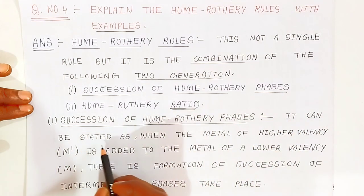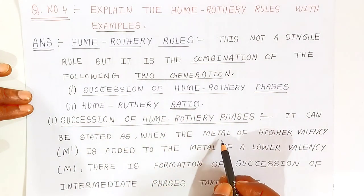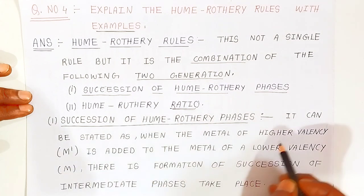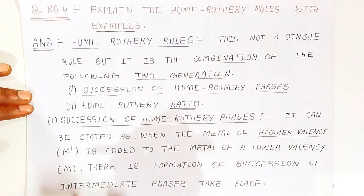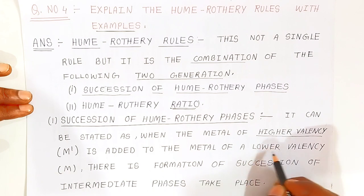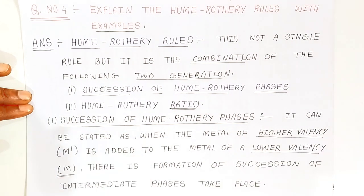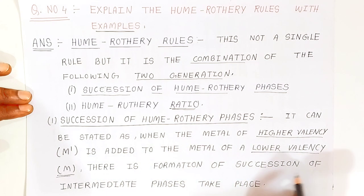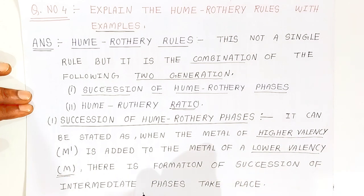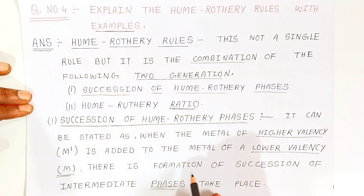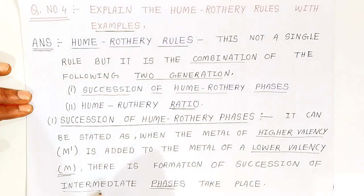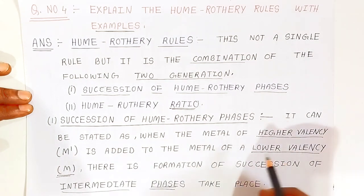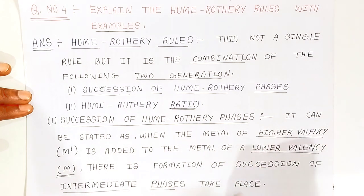It can be stated as: when the metal of higher valency, shown as M', is added to the metal of lower valency, shown as capital M, there is a formation of a succession of intermediate phases. When the alloys form, there is formation of different intermediate phases of alloys.